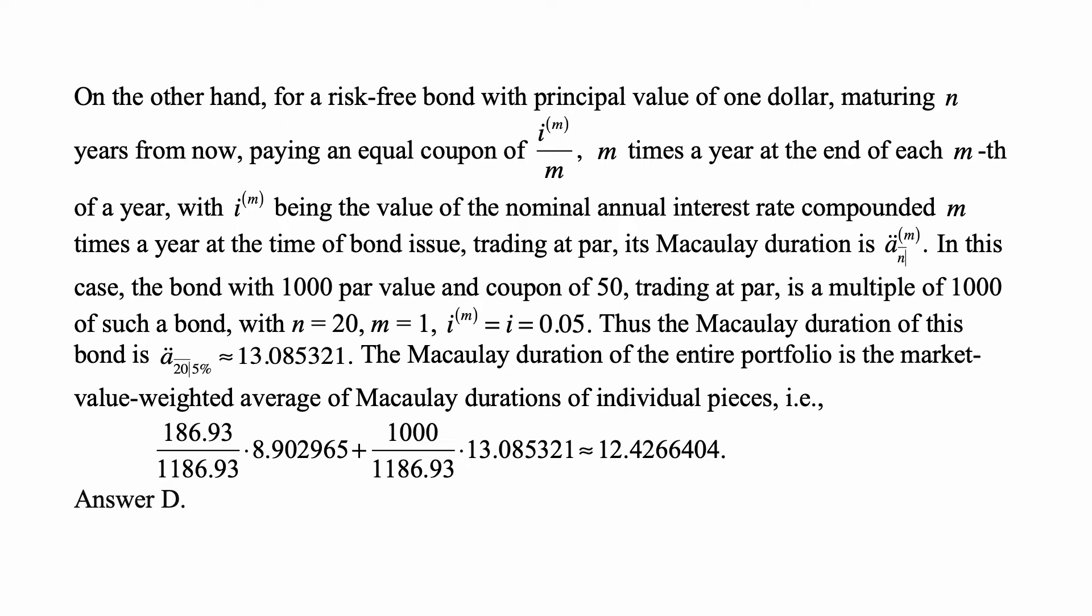In this case, the bond with 1,000 par value and coupon of 50 trading at par is a multiple of 1,000 of such a bond, with n = 20, m = 1, i^(m) = i = 0.05. Thus, the Macaulay duration of this bond is ä-double-dot-angle-20 at 5%, which is 13.085321.